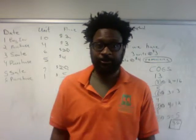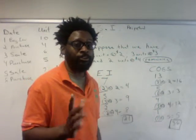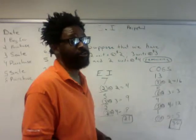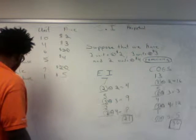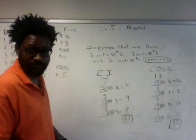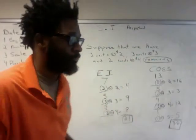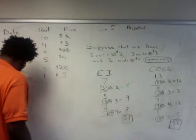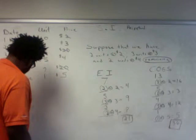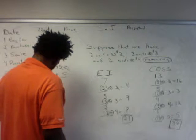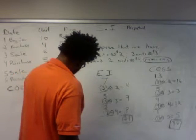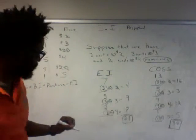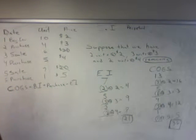It starts off with our cost of goods sold formula: beginning inventory plus purchases minus ending inventory equals cost of goods sold.